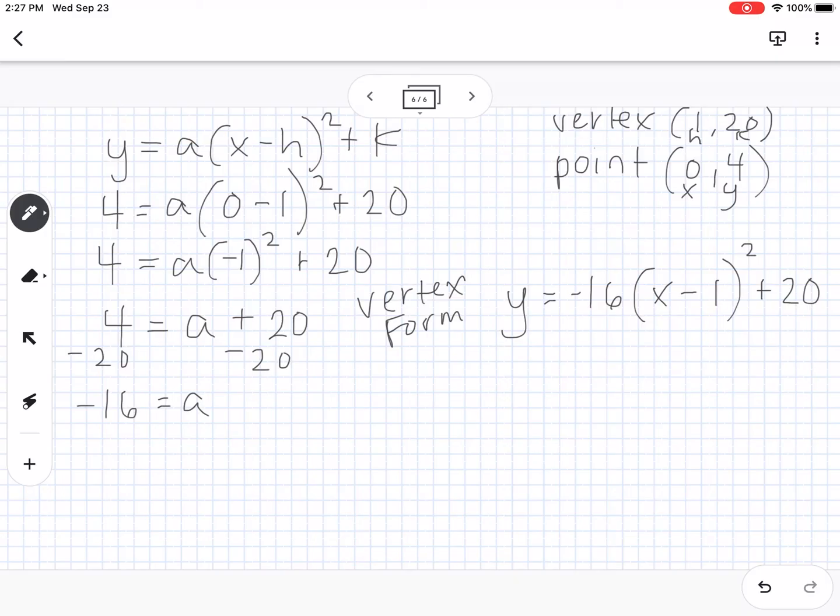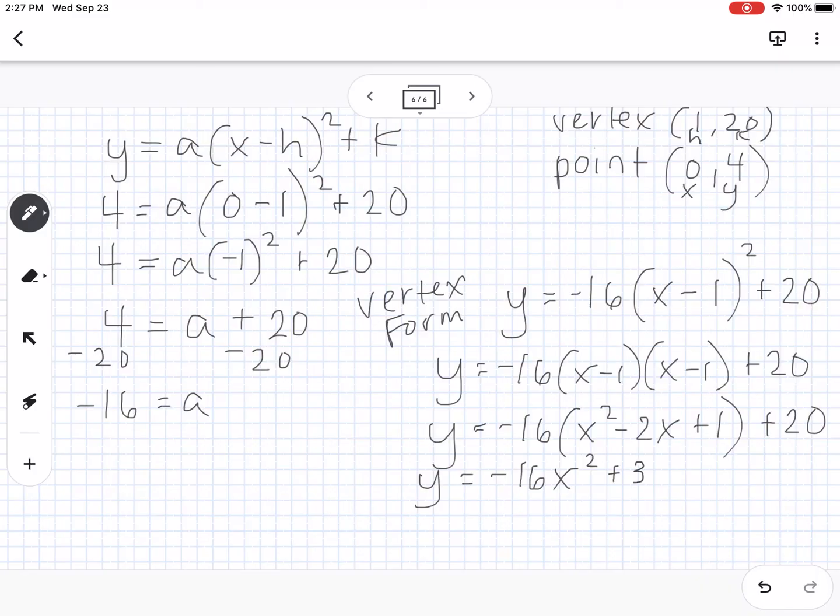If we go back to the directions, it says they want us to write it in standard form as well. So I'm going to multiply this out. This is -16(x - 1)(x - 1) + 20. I need to foil the (x - 1)(x - 1). I'm going to leave the 16 out for now and foil this. So if I foil it, I get x² - x - x. So that would be -2x + 1 = 20. Now I'm going to distribute that negative 16. So this would be -16x² + 32x - 16 + 20. And our final step is to combine like terms. So we have -16x² + 32x + 4. That right there is standard form.